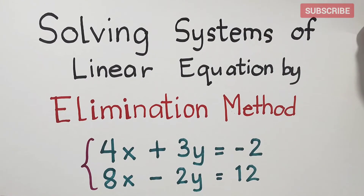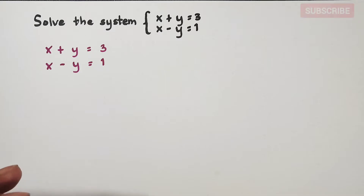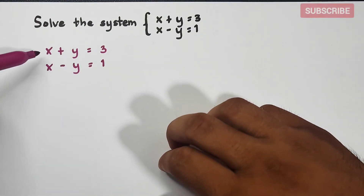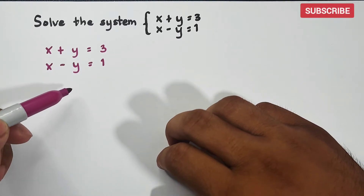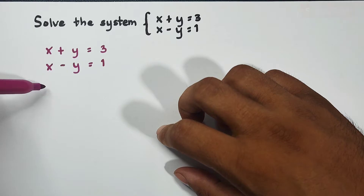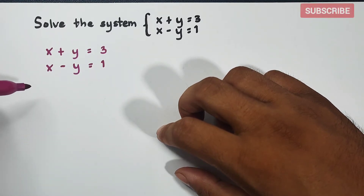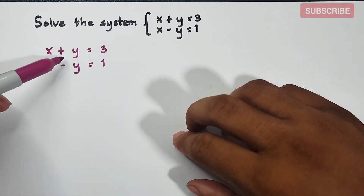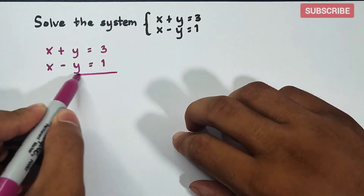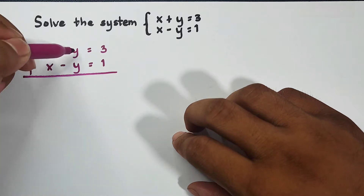We will use the elimination method. The basic concept is that you have two different variables, x and y, and what you need to do is eliminate one of them — either x or y. Normally, check the x first to see if you can directly eliminate. Here, as you can see, we have positive y and negative y, and if we add them, y plus negative y is equal to zero, so y gets eliminated.